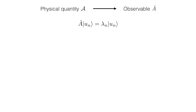In this video we discuss what happens in quantum mechanics when we measure a physical quantity. The quantity could be for example the position of a particle, or its momentum, or its energy, but to keep the discussion general we're simply going to call this physical quantity A.